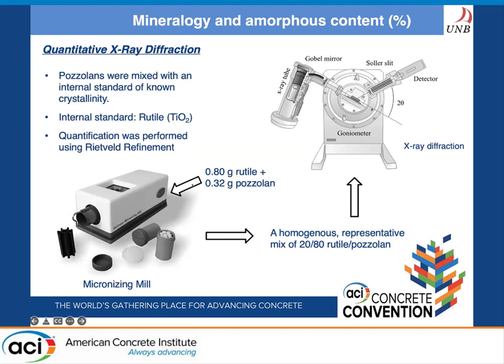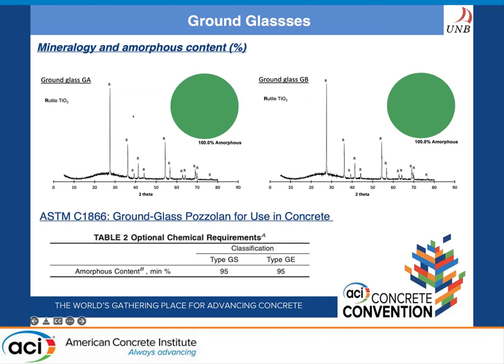These materials were analyzed for their amorphous content and the types of mineral phases present using quantitative X-ray diffraction. The pozzolans were mixed with an internal standard of rutile using a micronizing mill to produce a homogeneous mix, which was then used to conduct X-ray diffraction. The data was analyzed to determine amorphous content and mineral phase content. The XRD results show that these ground glasses are entirely amorphous — no crystalline phases are present. The peaks visible belong to the internal standard rutile. These glasses easily meet the minimum requirement of 95% amorphous content under ASTM C1866.